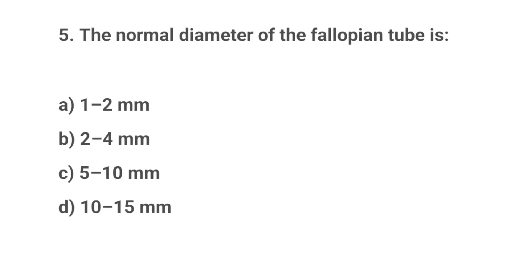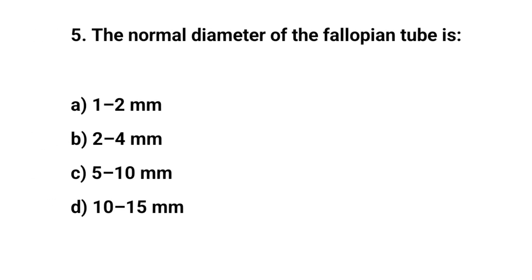Question No. 5. The normal diameter of the fallopian tube is? Right answer is B: 2–4 mm.